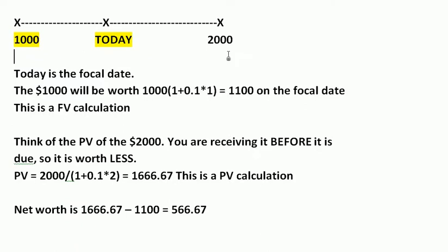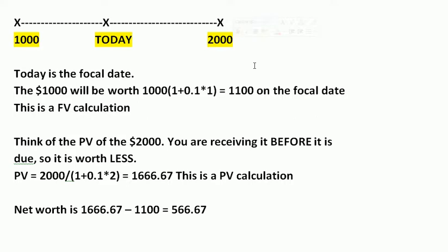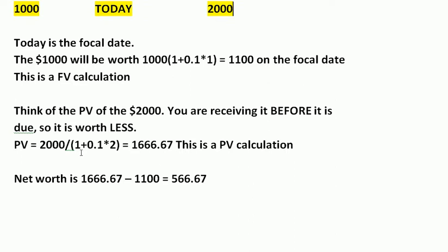Now, somebody else is going to pay you two thousand dollars two years into the future, but you want to get that money today. So it's a present value calculation — you're getting it two years before you should, so you wouldn't expect to receive as much as two thousand dollars. It's going to be less. Think of the present value of the two thousand dollars: you are receiving it before it is due, so it's present rather than future and it's going to be worth less. So we use the present value calculation.